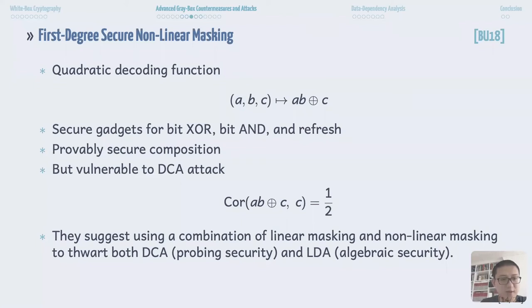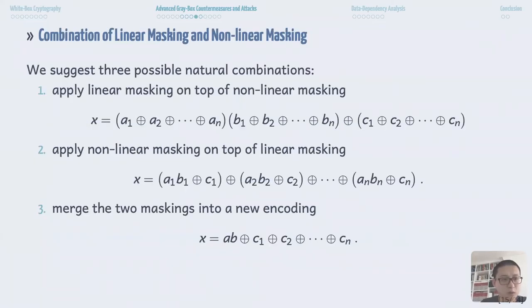Notice, this scheme itself is vulnerable to DCA attack since the correlation score between the sensitive variable and C is 1 over 2. Hence, the authors suggest using a combination of linear masking and non-linear masking to thwart both DCA and LDA attacks at the same time. However, the authors didn't show how to do that.